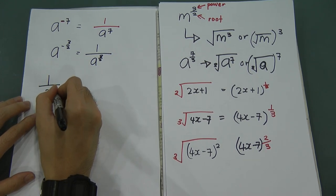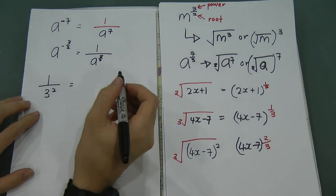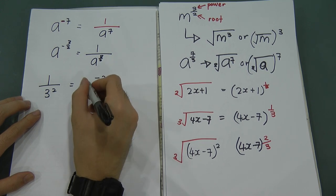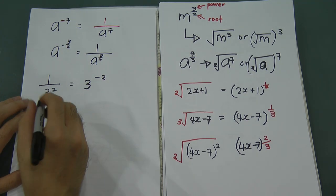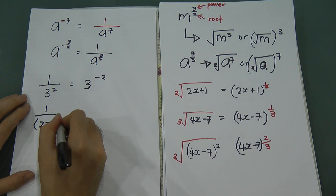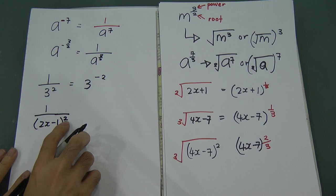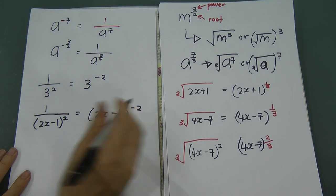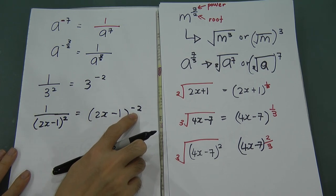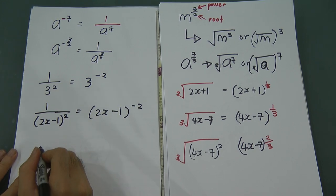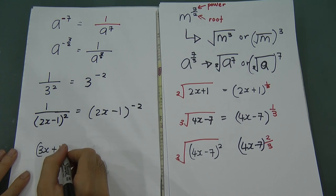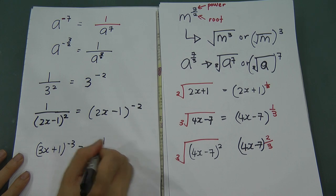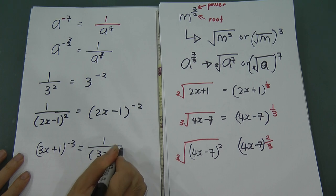Conversely, if you see 1 over 3 squared, that 1 over means the power becomes negative. So 1 over (2x minus 1) squared equals (2x minus 1) to the power of negative 2. And if you see (3x + 1) to the power of negative 3, that means 1 over (3x + 1) to the power of 3.